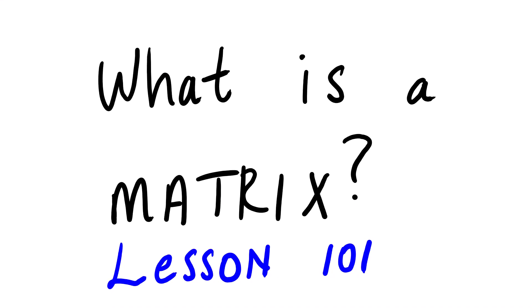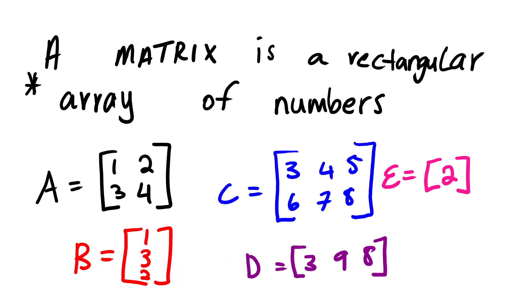Today we are looking at matrices. We are going to describe and explain what a matrix is. Basically, a matrix is a rectangular array of numbers. What you see here are examples of different types of matrices.